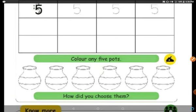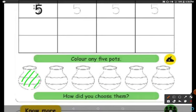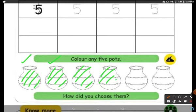Now color any 5 parts. There are more than 5 parts here, but you color only 5 parts. 1, 2, 3, 4, 5 — I have colored 5 parts. In your book you can do it using the colors which you like.